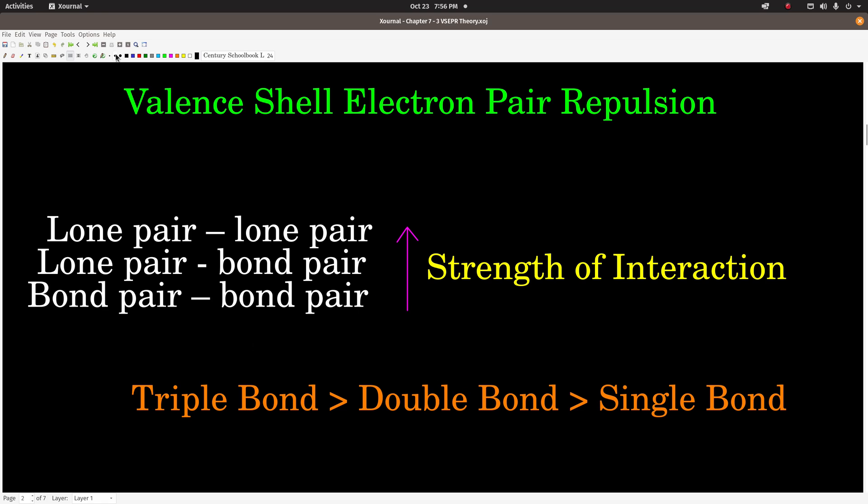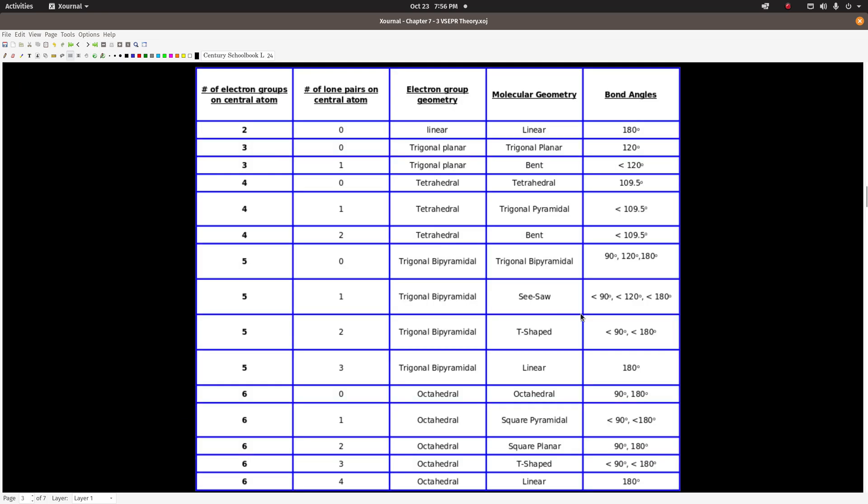So just this right here, guys—this is all you really need to understand VSEPR theory. This determines the shapes of molecules, the three-dimensional shapes. It's really cool. So this table right here is going to be very important for you. You should probably put this on your card.